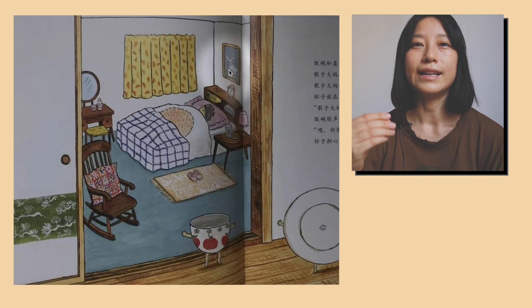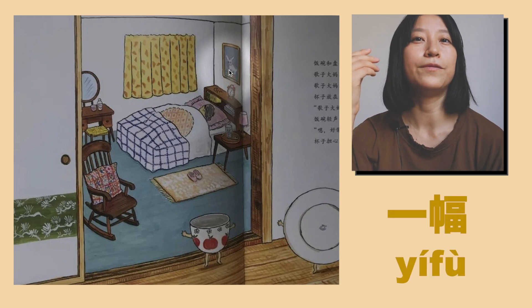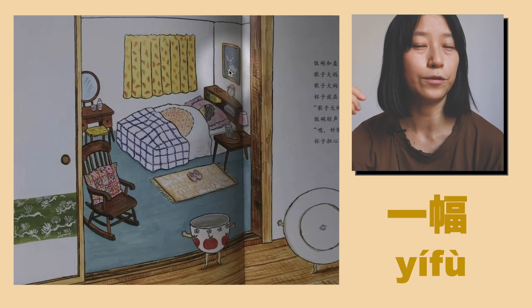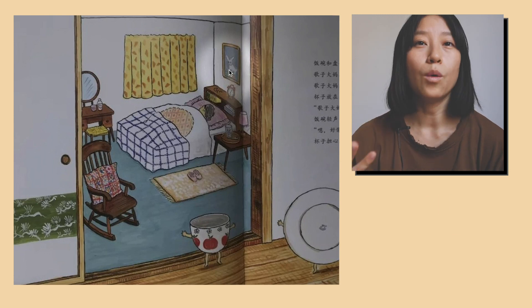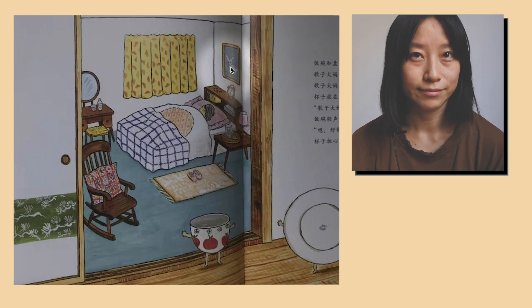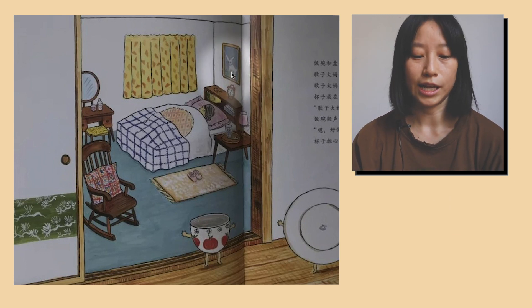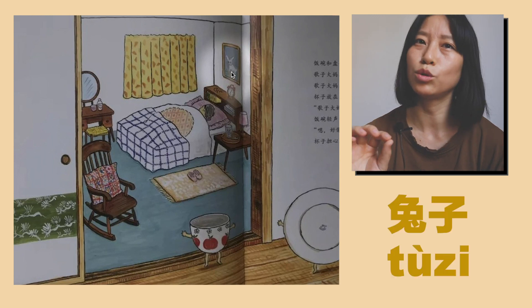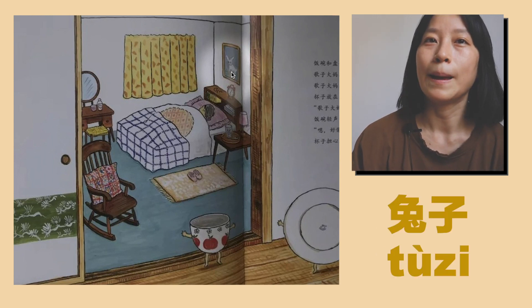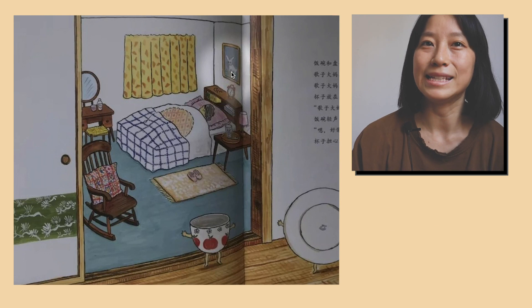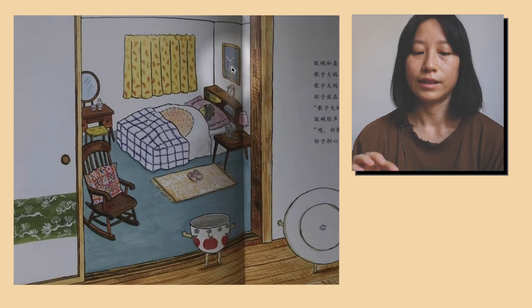鬧鐘的上面有一副畫。畫上有一個兔子。白色的兔子。 (Above the alarm clock there is a painting. In the painting there is a rabbit. A white rabbit.)